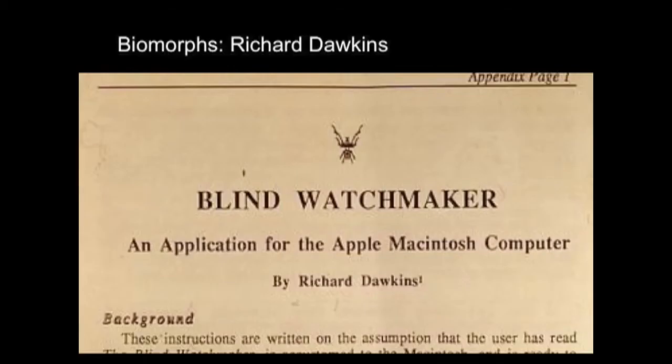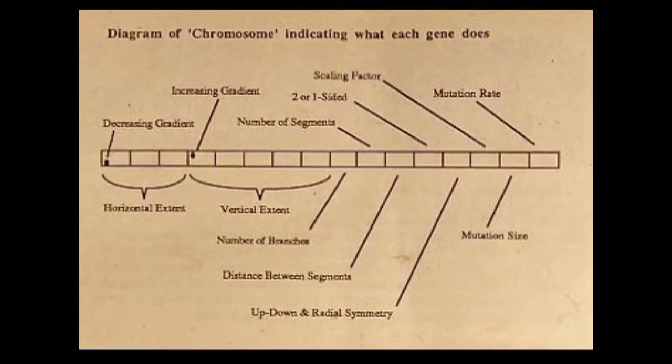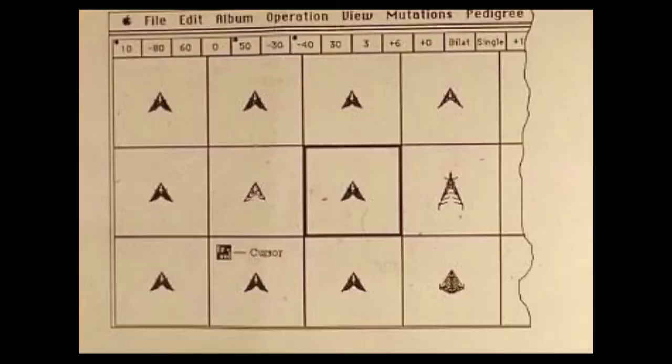When we said we were going to use genetic algorithms for design problems, everyone said it wouldn't work for two reasons: design problems are ill-defined, and we have conflicting criteria. My response was: genetic algorithms are based on an analogy with nature. Nature managed to generate you — would you describe yourself as a clearly defined problem? Would you identify any non-conflicting criteria? Nature is nothing but ill-defined problems and conflicting criteria, and nature managed to cope. What's wrong with your algorithm?